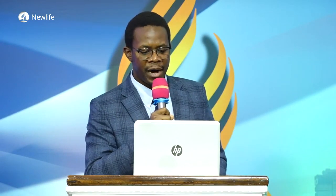Coming to the epidemiology — basically to see how common it is in the population — we see that it is a common condition with an estimated incidence of around 1 to 2 cases per 1,000 individuals per year. It is more common in older individuals and people with certain risk factors as we are going to see later.